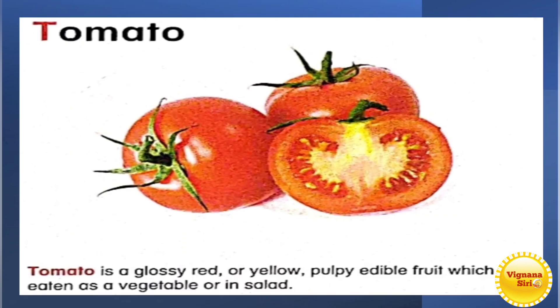Now we'll see some words with T. T for tomato. You know this vegetable very well because almost in all curries, everyone will use this tomato. You can eat it raw also. It will be very nice taste, right? So it's a glossy red or yellow pulpy edible fruit.